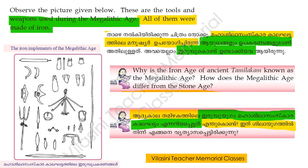The tools and weapons used during the Megalithic Age are made up of iron. Why is the iron age of ancient Tamilakam known as the Megalithic Age? The knowledge we get about that ancient life comes to us from the Megaliths — that is why the iron age of ancient Tamilakam is specifically called the Megalithic Age — Mahashila Samskara Kalam.